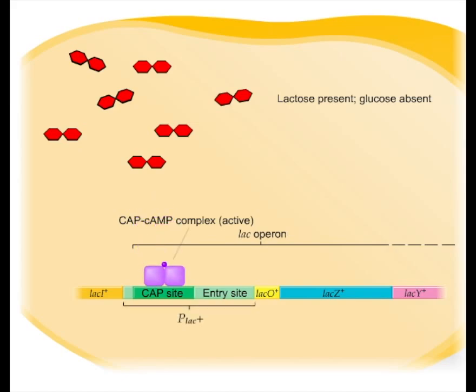The resulting CAP-cyclic AMP complex binds to the CAP site in the lac promoter. This increases the rate of transcription of the lac operon structural genes by enhancing the binding of RNA polymerase to the promoter.